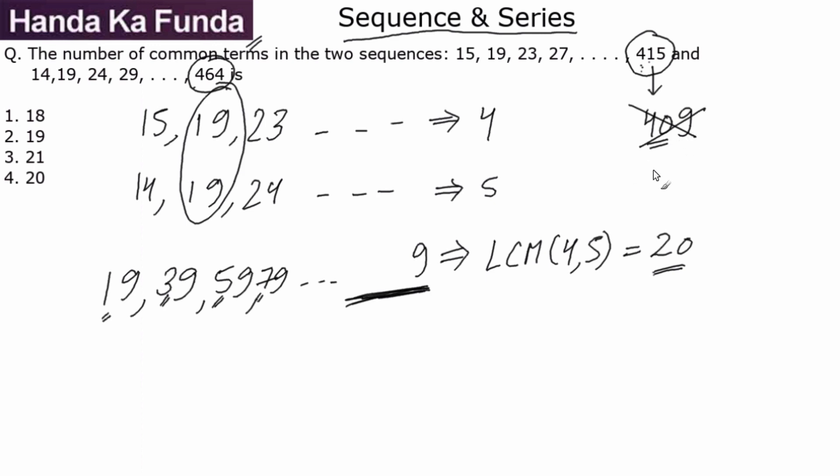It is ending in 9 and the number before 9 is odd, so that will fall in the series of 1, 3, 5, 7, and so on. So the series, the common series that we were looking for, is this: 19, 39, 59, 79, till 399.